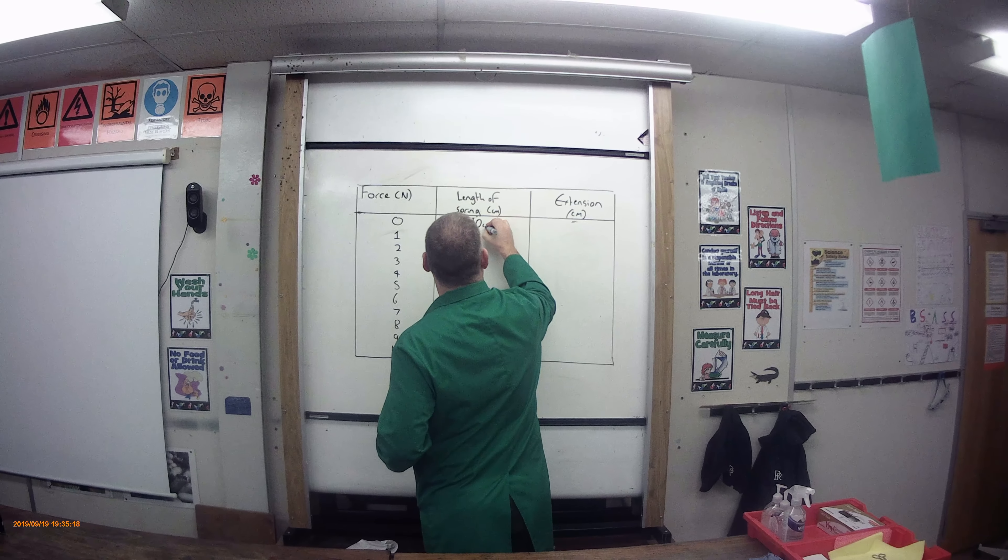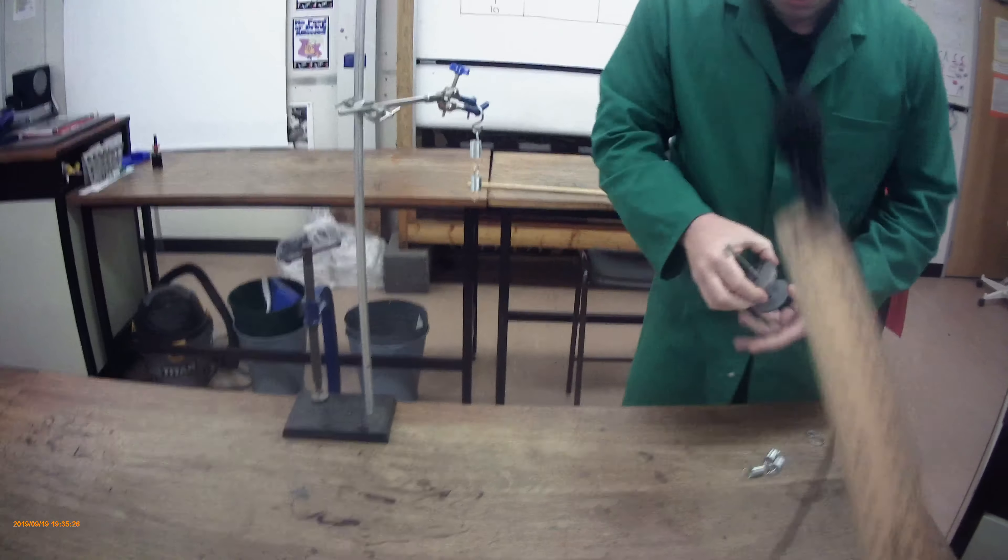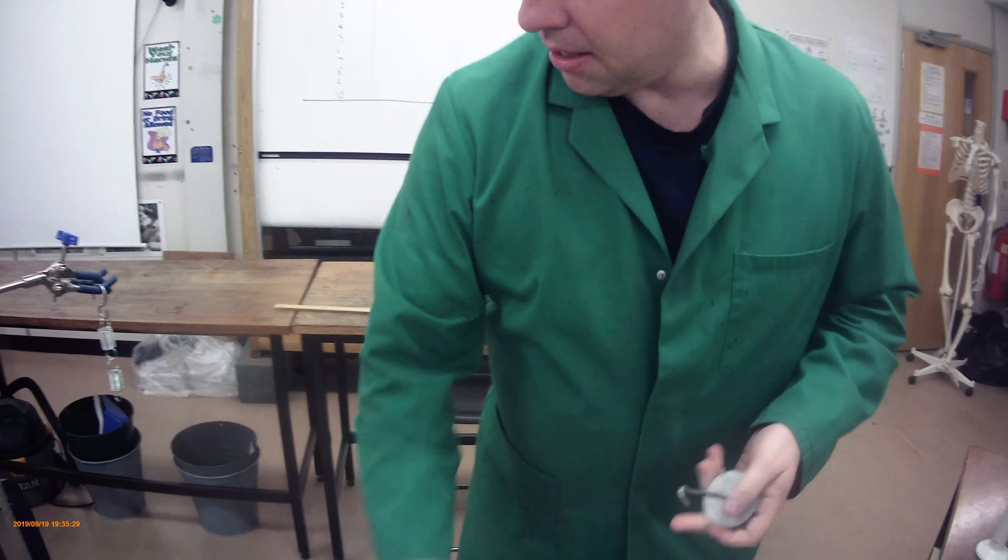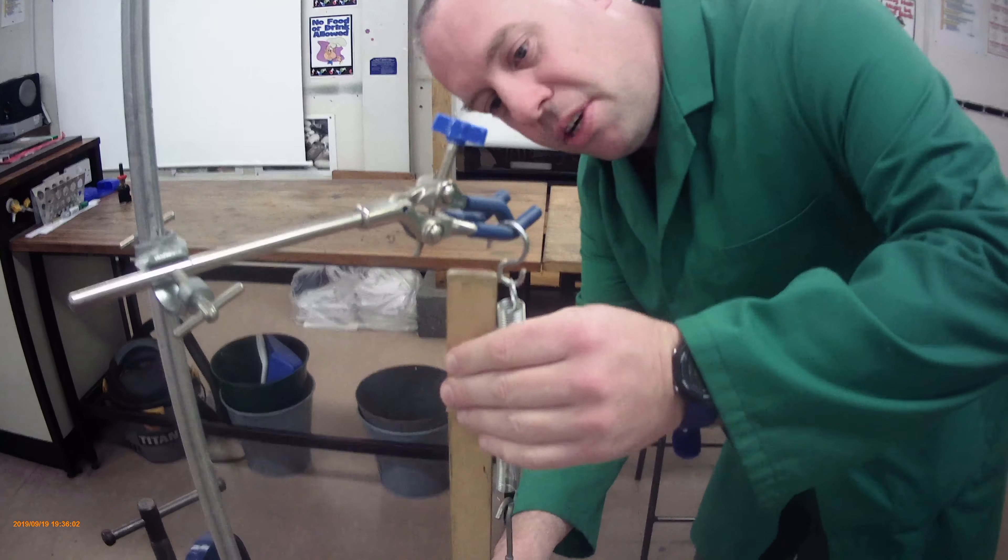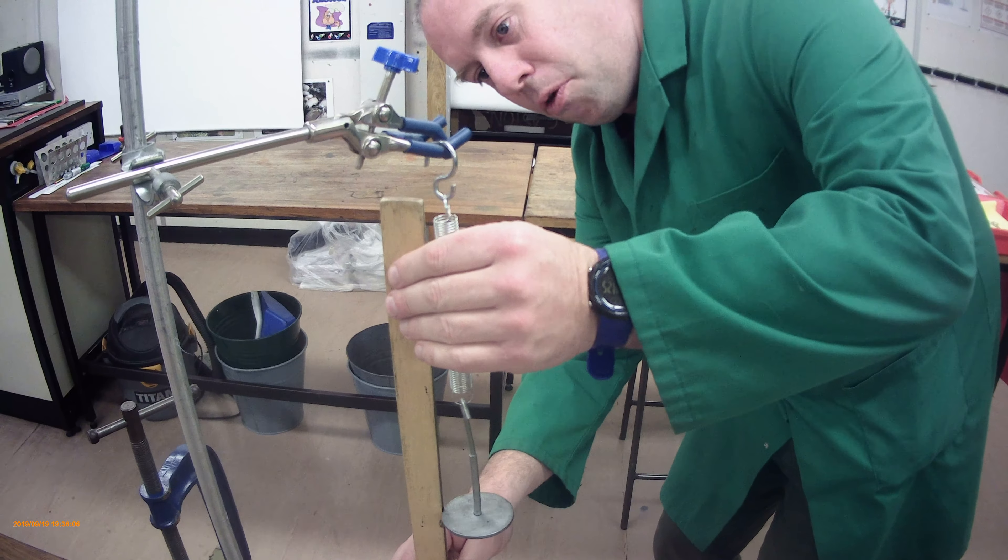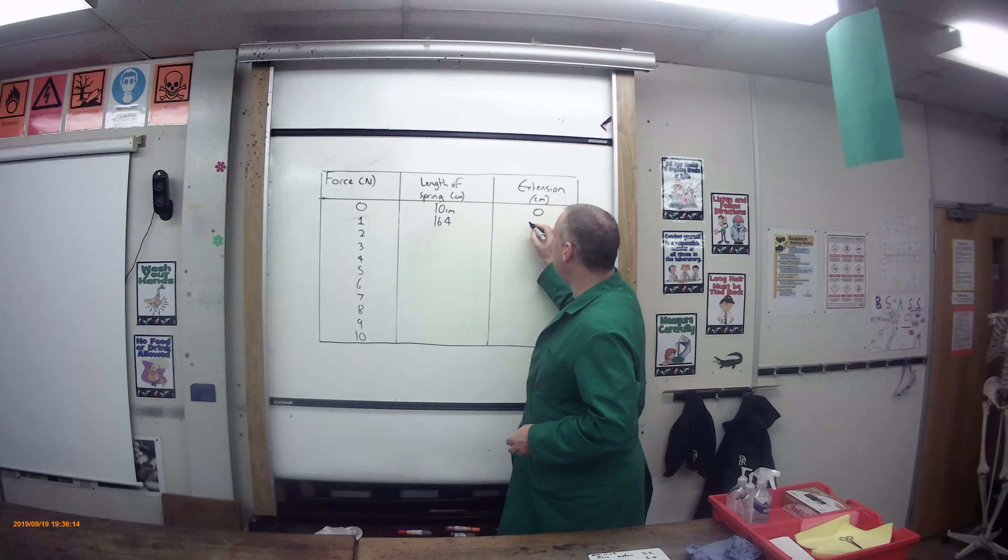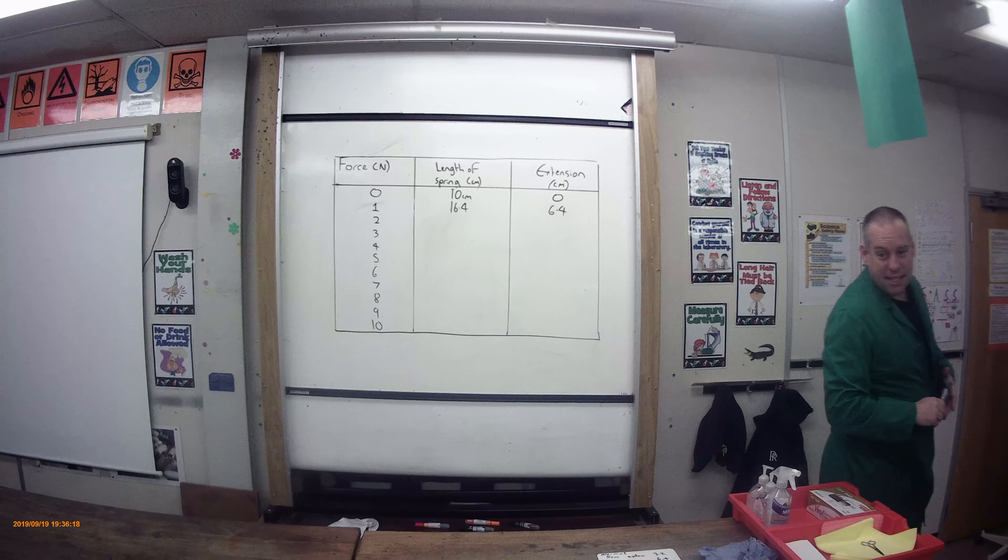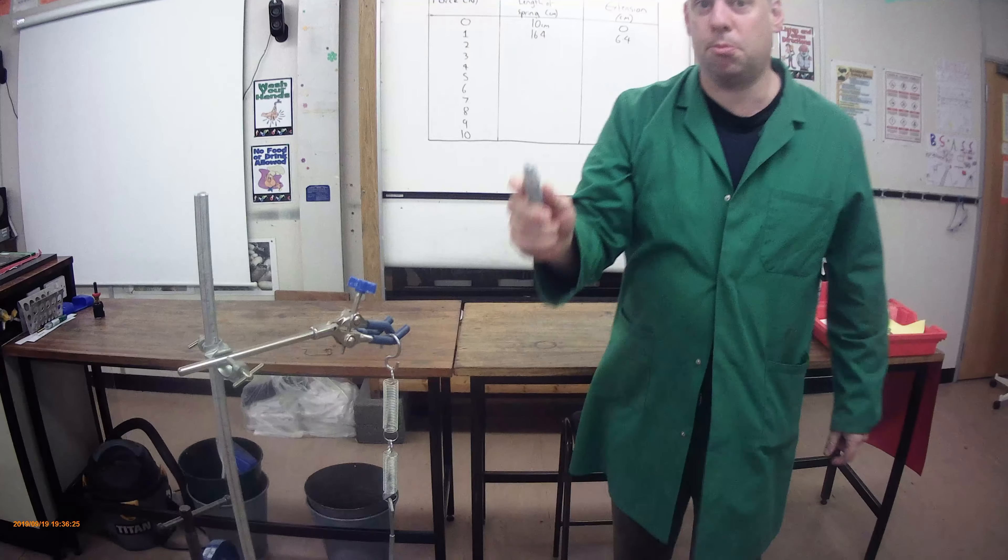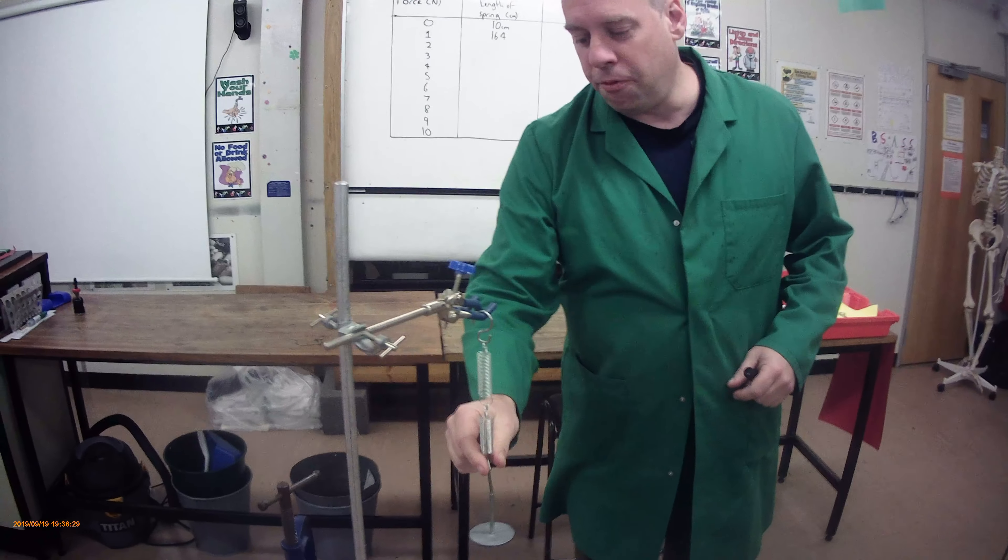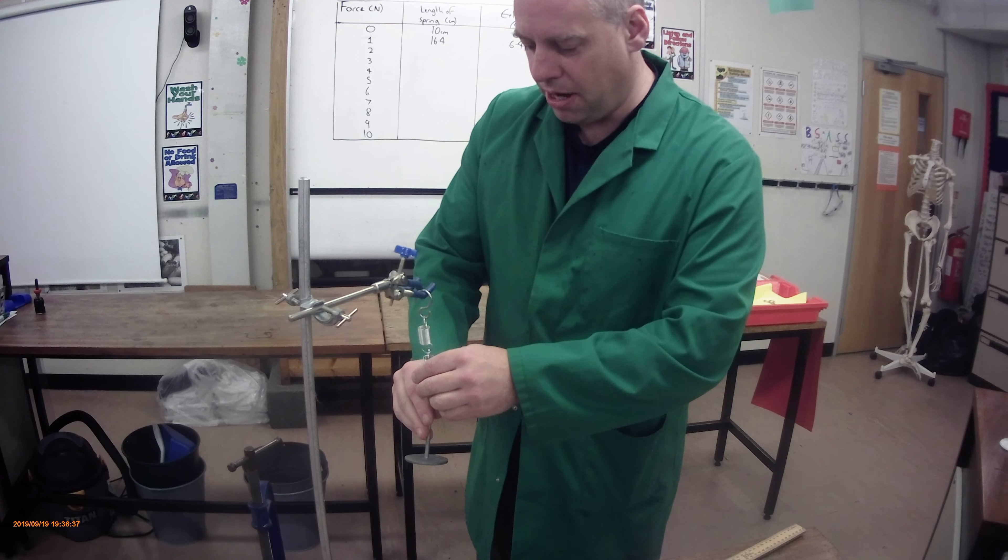And I'll start off with 10 centimeters here, extension of zero. And I'll start by putting on one mass. So now you can see it's extended there. I'm going to measure it again. And I've got 16.4. So that gives an extension of 6.4 centimeters. It means each spring here has extended by 3.2, which is the same as what we had with a single spring. So by putting two springs on, our overall extension has doubled. Each spring extends by the same amount. So that is springs in series.